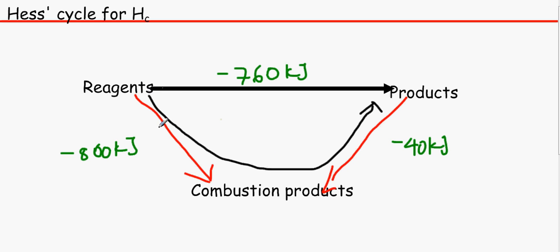Now if you went through this route, we know that it would take minus 800 kilojoules of energy to get to the combustion products, and it will take the opposite of minus 40 to get to the products because we're going the opposite way of what the arrow tells us. So that's going to be plus 40, and this is going to be minus 800. Minus 800 plus 40 makes minus 760 kilojoules. And that is it for this session.